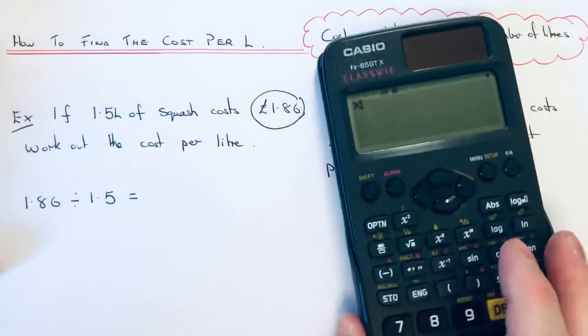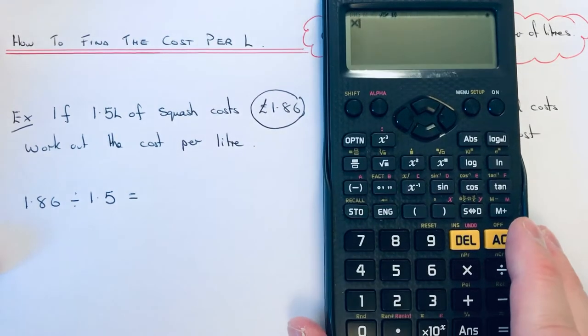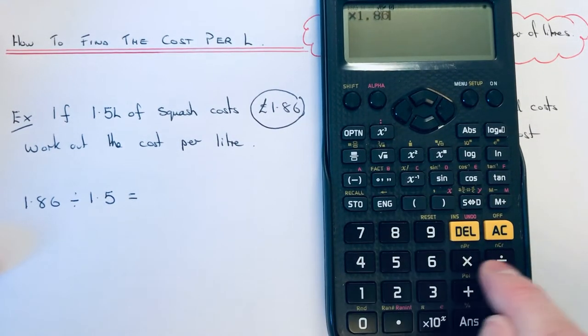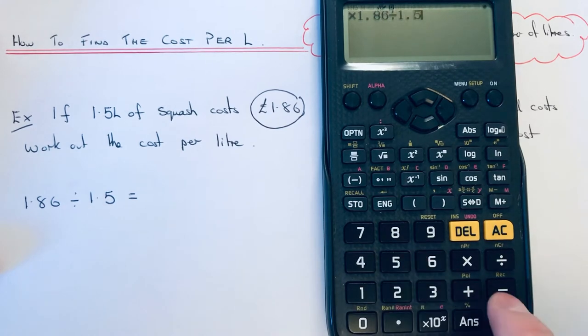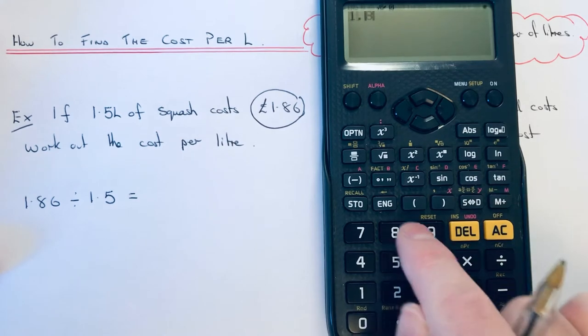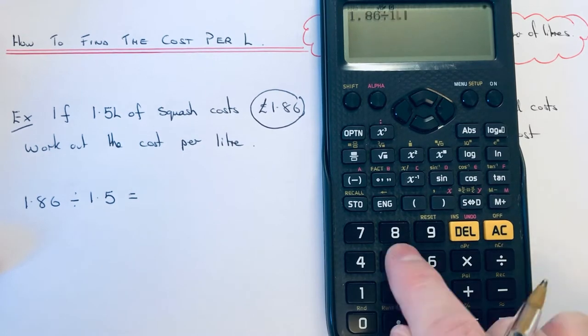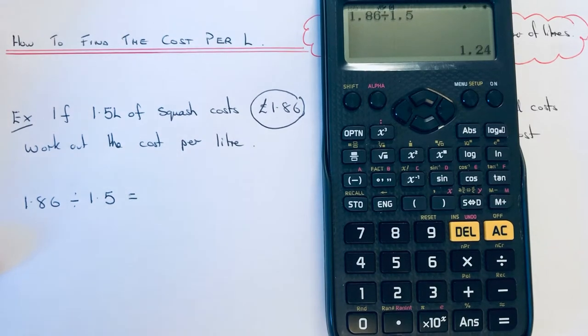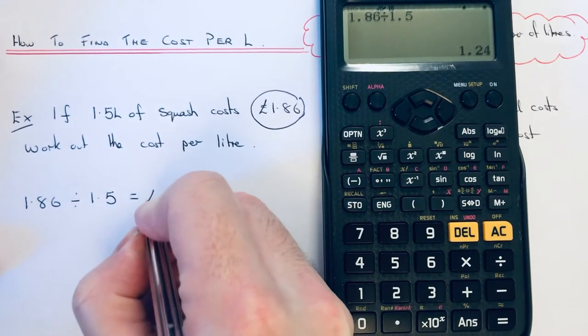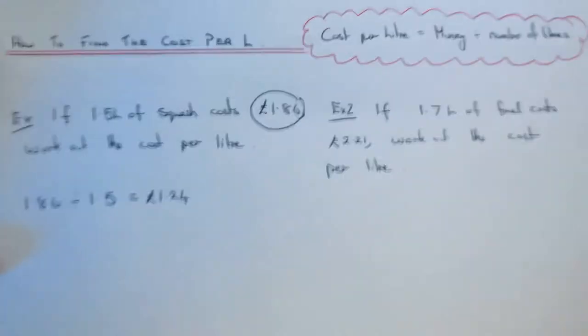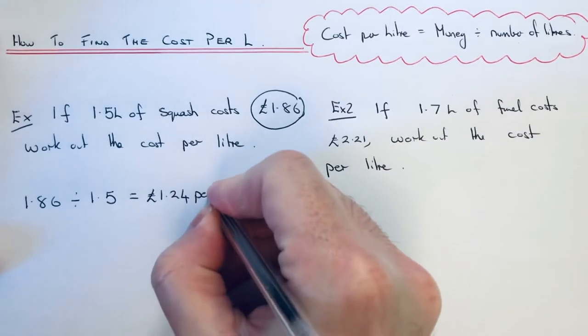If we get a calculator to work that one out, £1.86 divided by 1.5, let's do that again. We get an answer of £1.24. So that is the cost per litre.